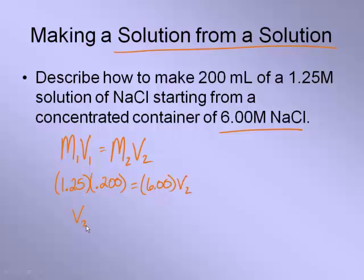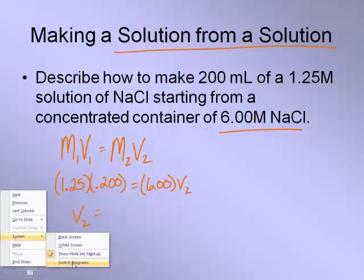Now when I solve for this V2, what the V2 is telling me is how much of the original solution I need to pull in order to add water to it to make the more dilute solution.